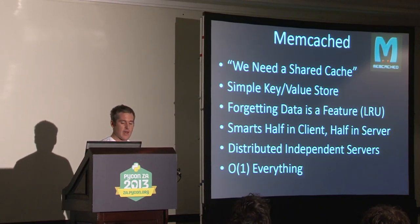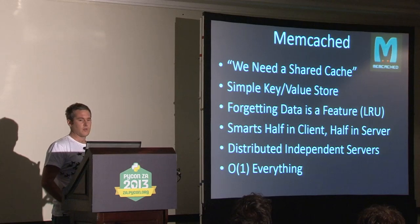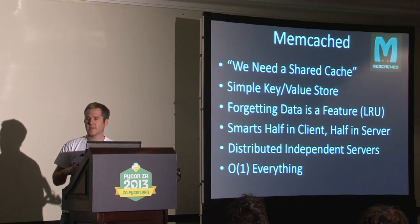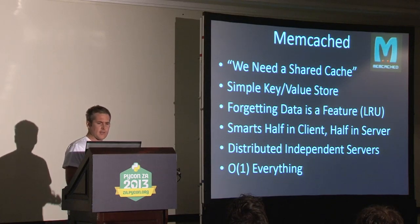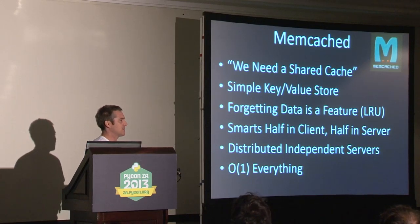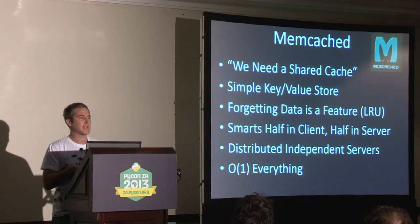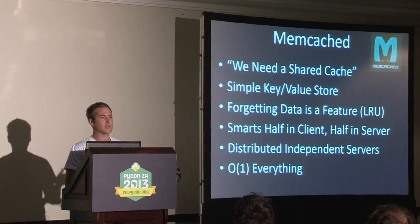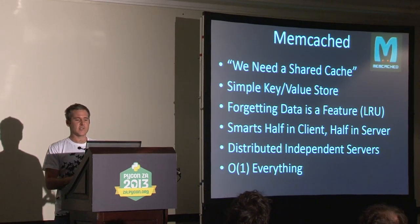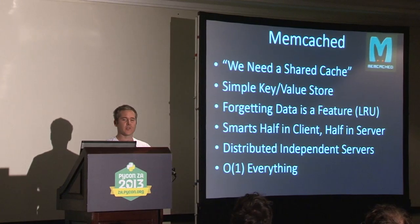We decided we needed a shared cache, looked around a bit, and selected Memcached. From their website: it is a simple key-value store — essentially a shared dictionary you can put data into. Forgetting data is a feature: it has a least recently used scheme. It's an interesting one: smarts are split half in the client and half in the server. They have a distributed model — you can install multiple instances of Memcached, and there's no coordination between those servers, so it's up to the client to make sure the same key goes to the same node.